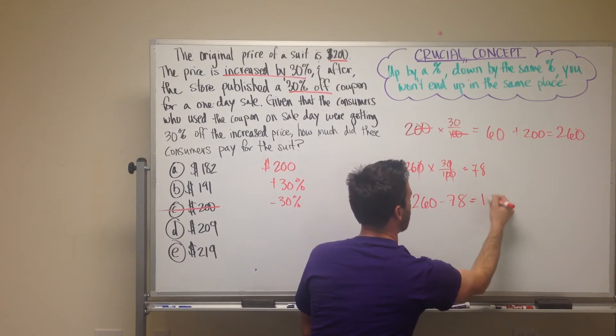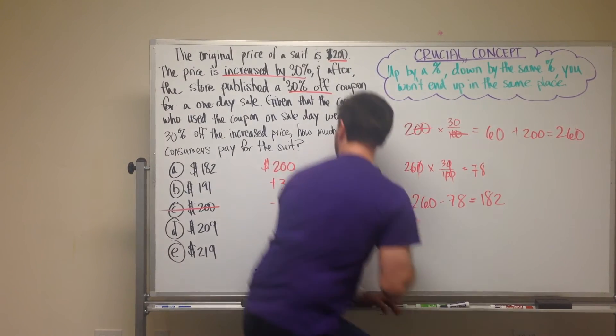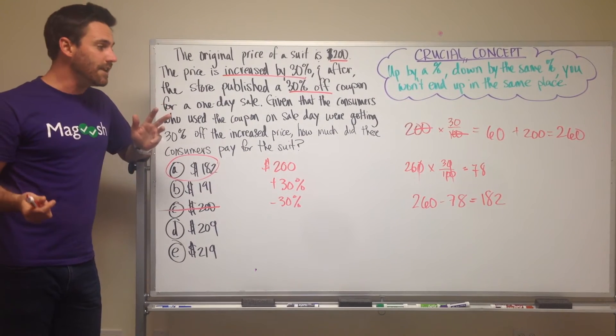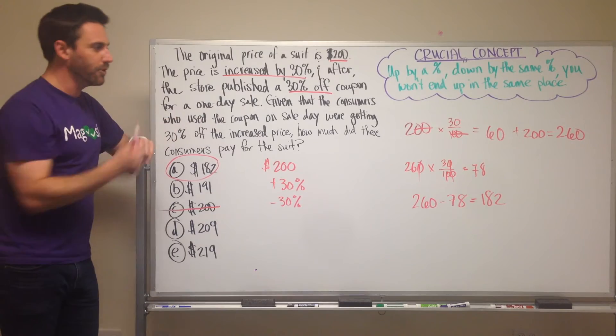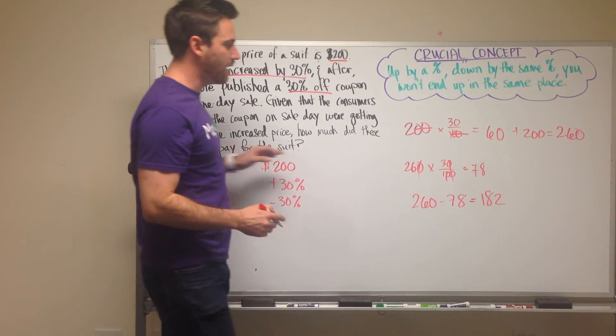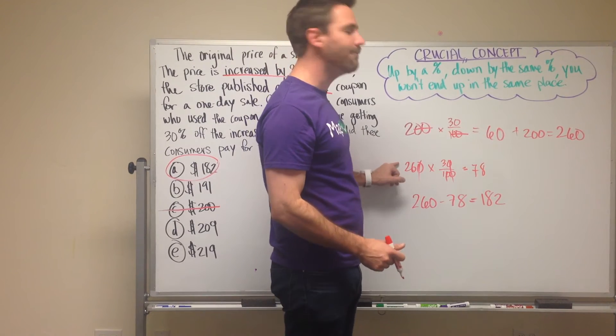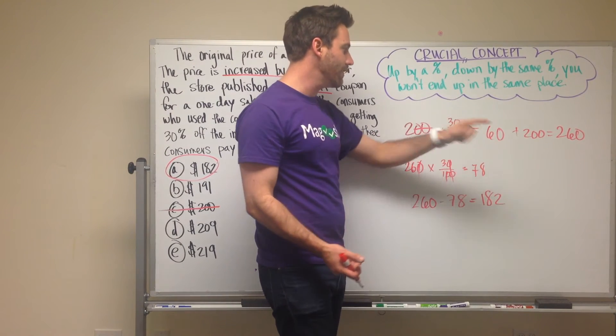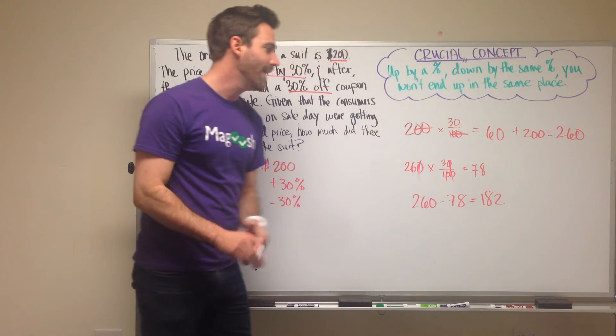So we can see that when we write out the problem this way, we're not going to end up in the same place because we're taking 30% of a different number than what we started with. 30% of 200 is 60, and 30% of 260 is 78.